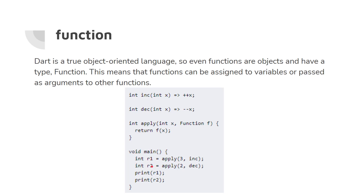r2 is apply with 2 as the first parameter and dec for decrease as the function parameter. This is how the function keyword is used as a parameter type. Other than this, you don't need to mention the keyword 'function' when you declare or define your function — it's only used when specifying a function as a parameter.